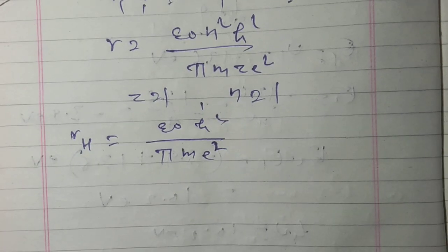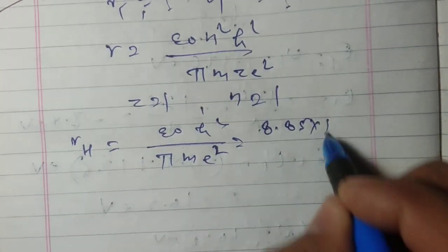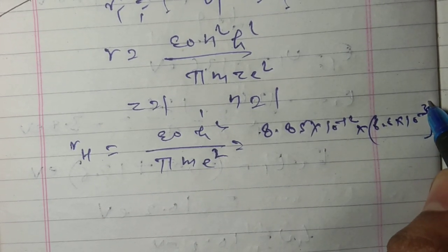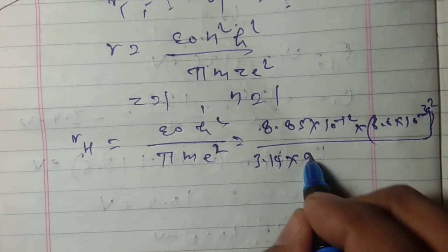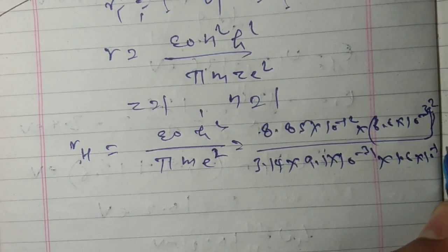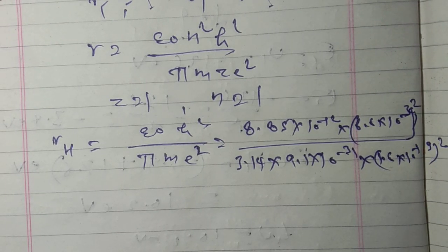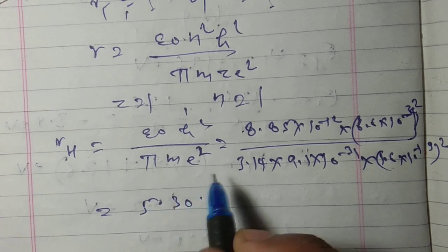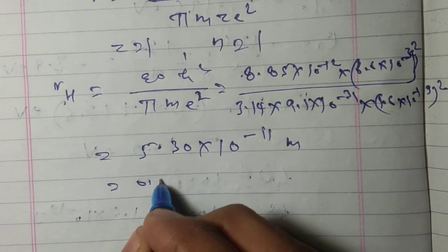Putting the values: ε₀ = 8.85×10⁻¹², Planck's constant 6.6×10⁻³⁴, π = 3.14, mass of electron 9.1×10⁻³¹, and charge of electron 1.6×10⁻¹⁹ squared. After calculation we get 5.30×10⁻¹¹ meter, or simply 0.53 angstrom.